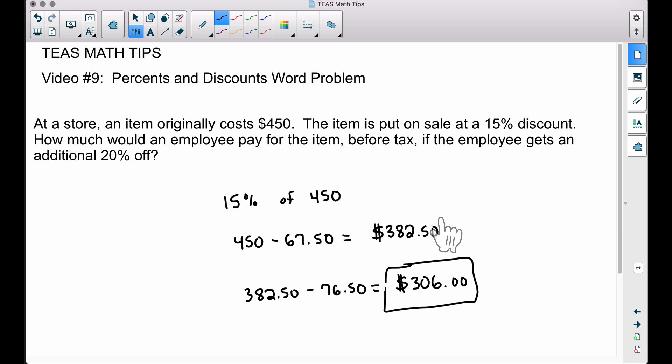This is how much the item costs with a 15% discount. Since the employee gets an additional 20% off, we found 20% of this, which is the $76.50. We subtract that from the discounted price we have up here to get our final price for an employee of $306.